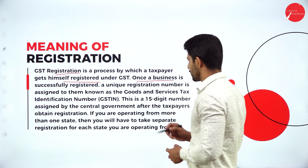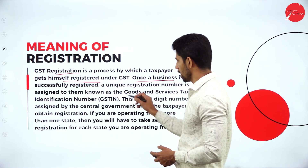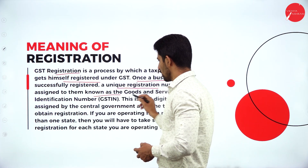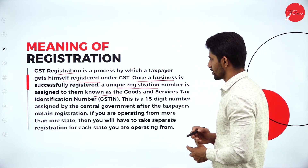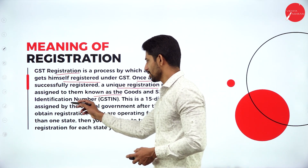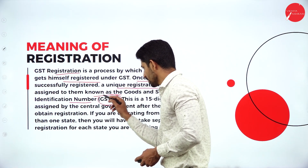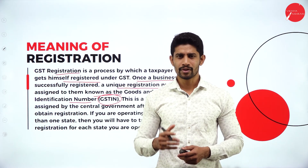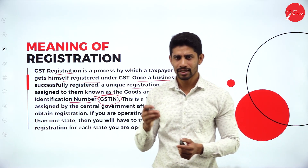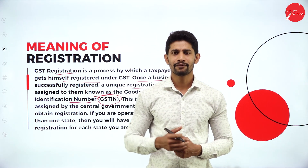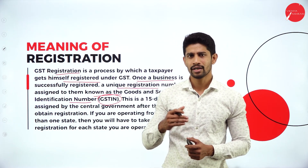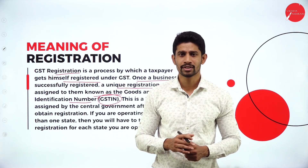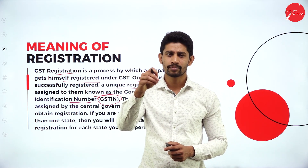Once a business is successfully registered, a unique registration number is assigned to them known as the Goods and Services Tax Identification Number, called GSTIN. Every person running a business registers himself with the GST authority. For example, if you want to study in a college, you first have to go to the college and take admission.